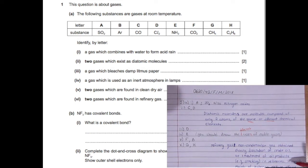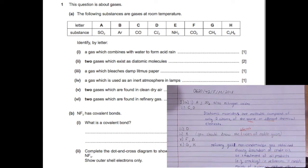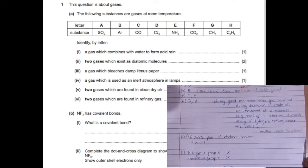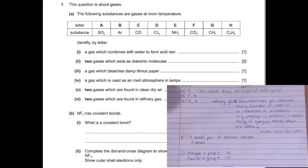For part B, nitrogen trifluoride has covalent bonds. So what is a covalent bond? A covalent bond is a shared pair of electrons between two atoms, and it's only between two atoms.